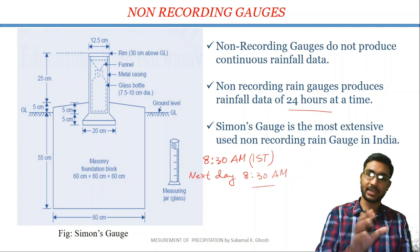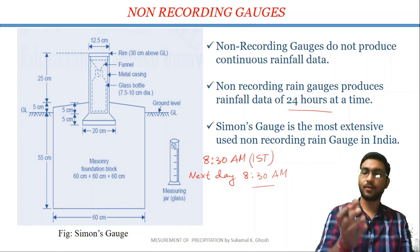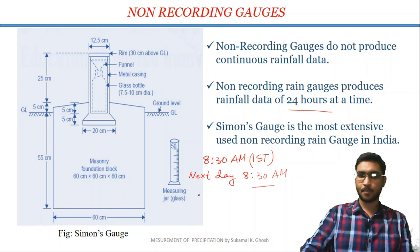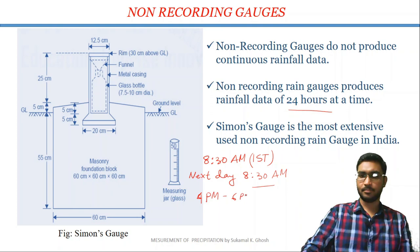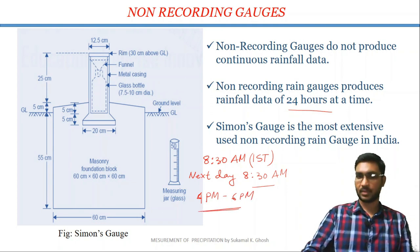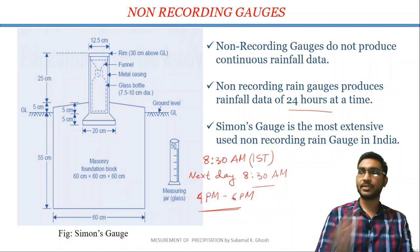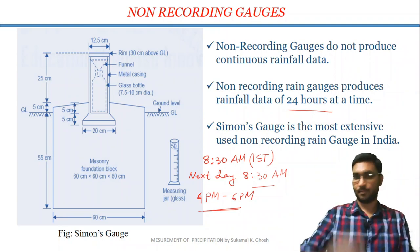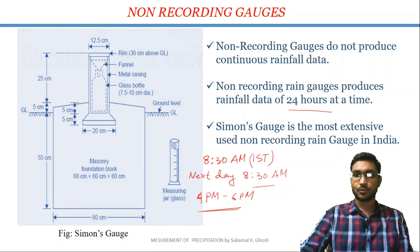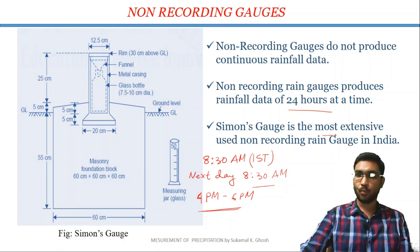Suppose you want a rainfall data or you want to know the rainfall intensity from, let's say, 4 PM to 6 PM. You will not get this kind of data because it does not produce the rainfall data with duration or with time. As discussed earlier, Simon gauge is the most extensively used non-recording gauge in India.